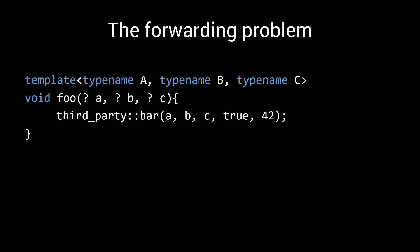We start with a problem. Say you've written this template function foo. Foo is pretty simple. All it does is accept three inputs and then it passes them on to its third-party function bar, along with some default fourth and fifth argument.